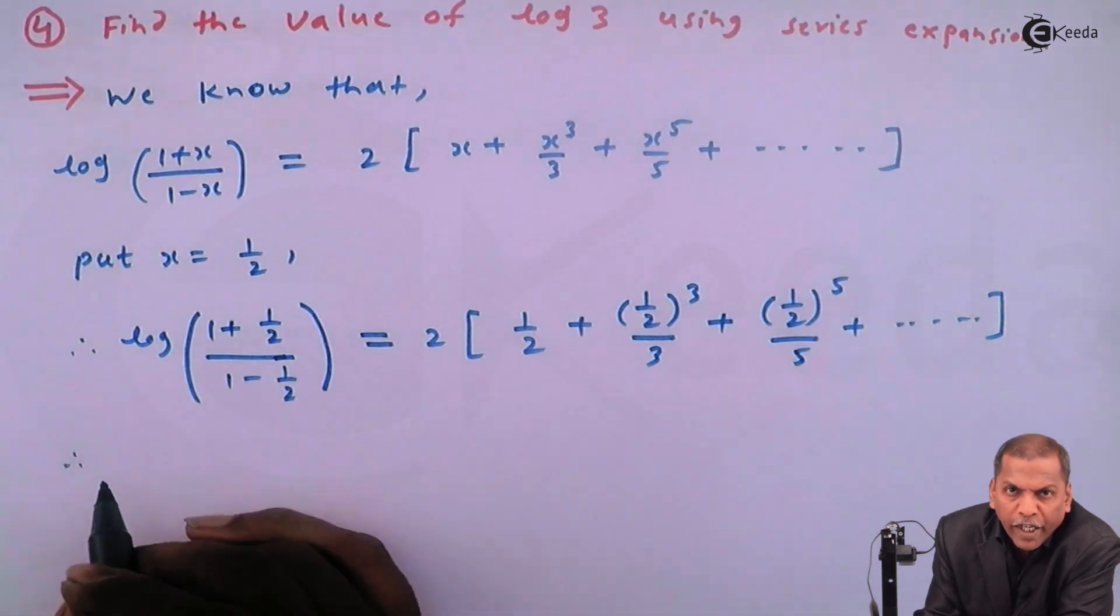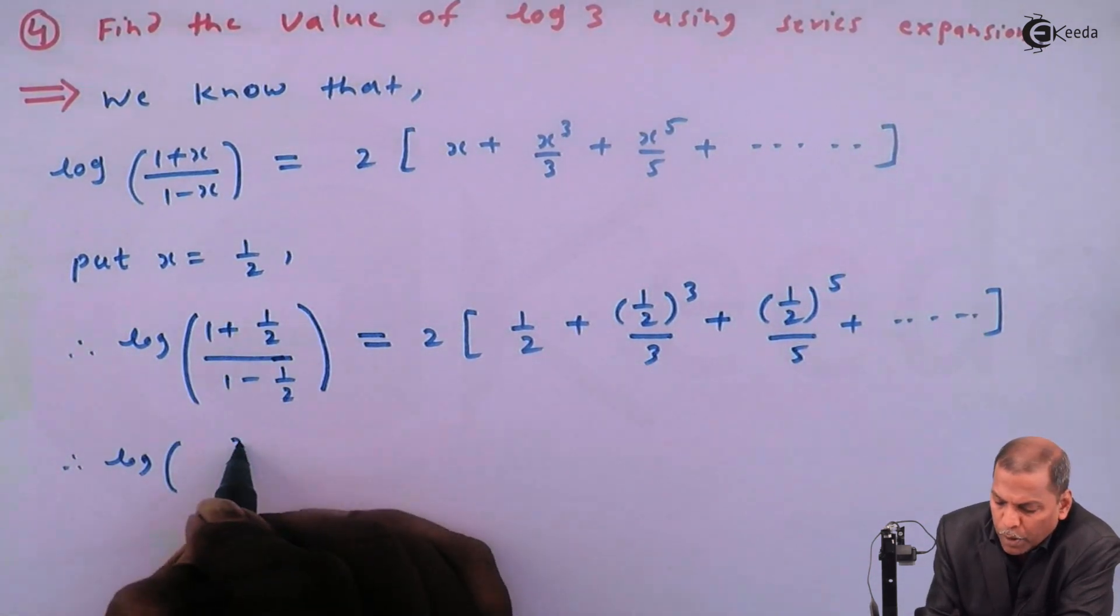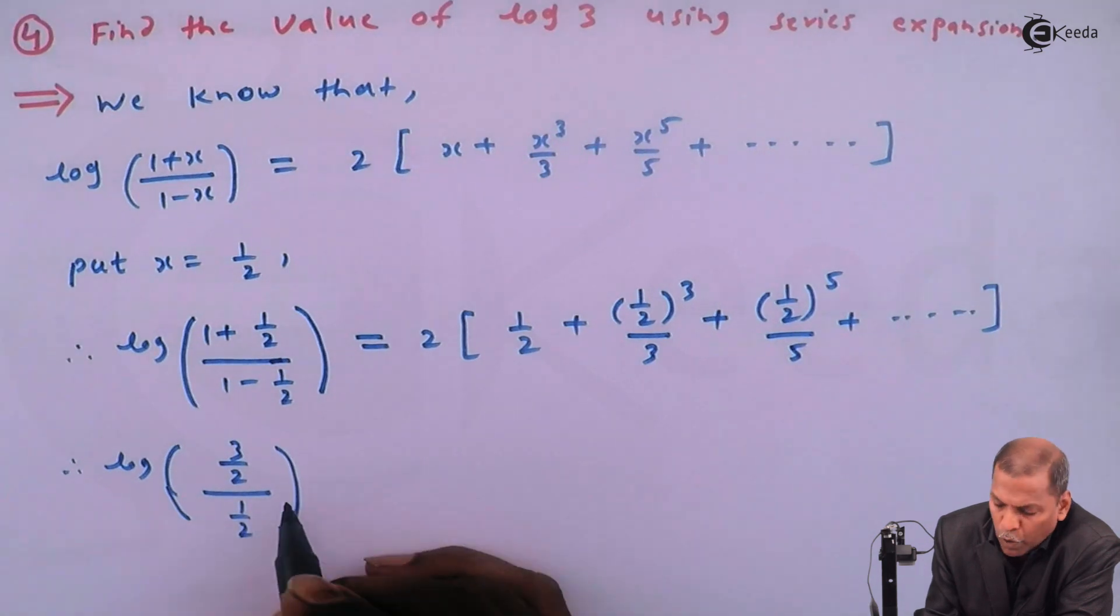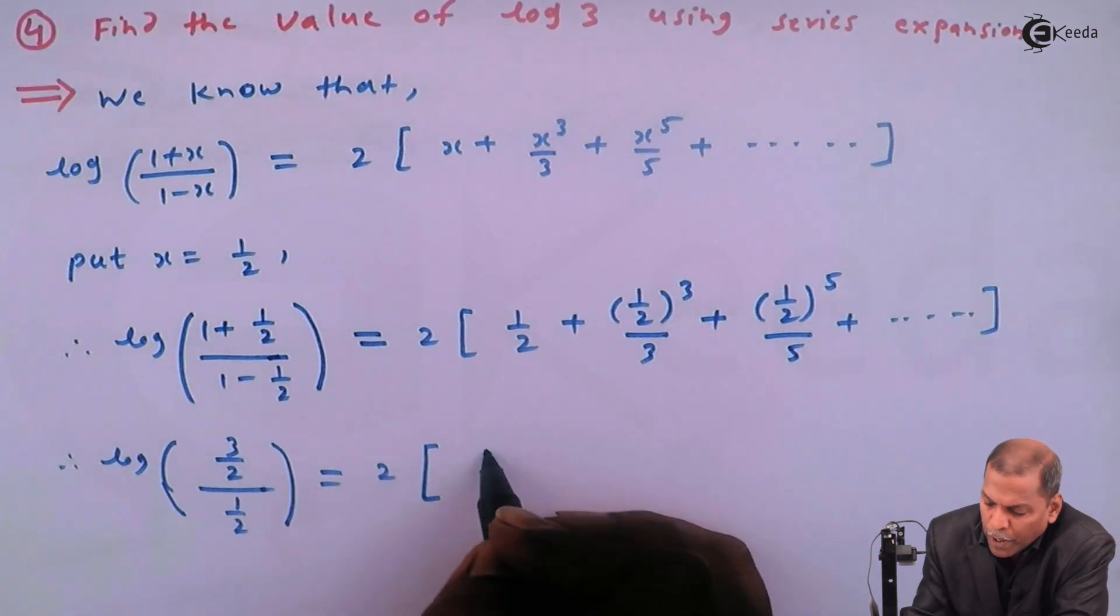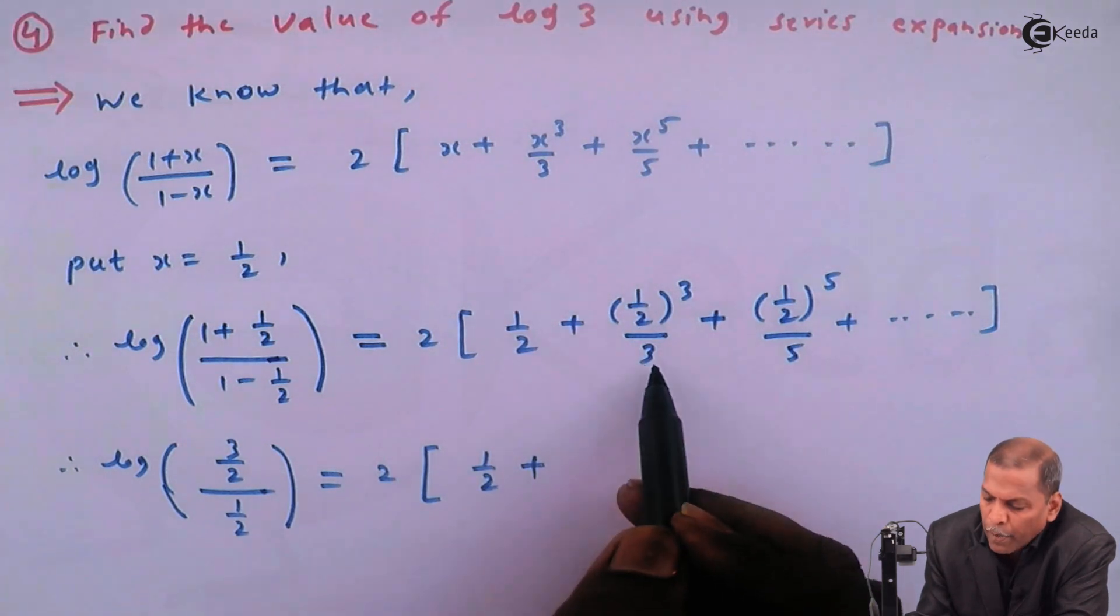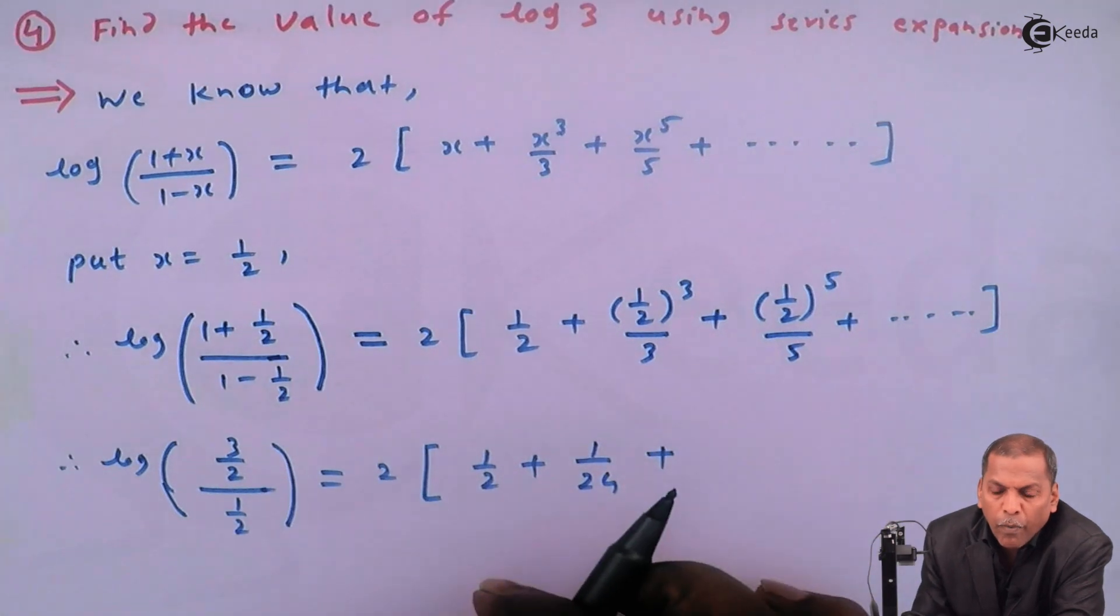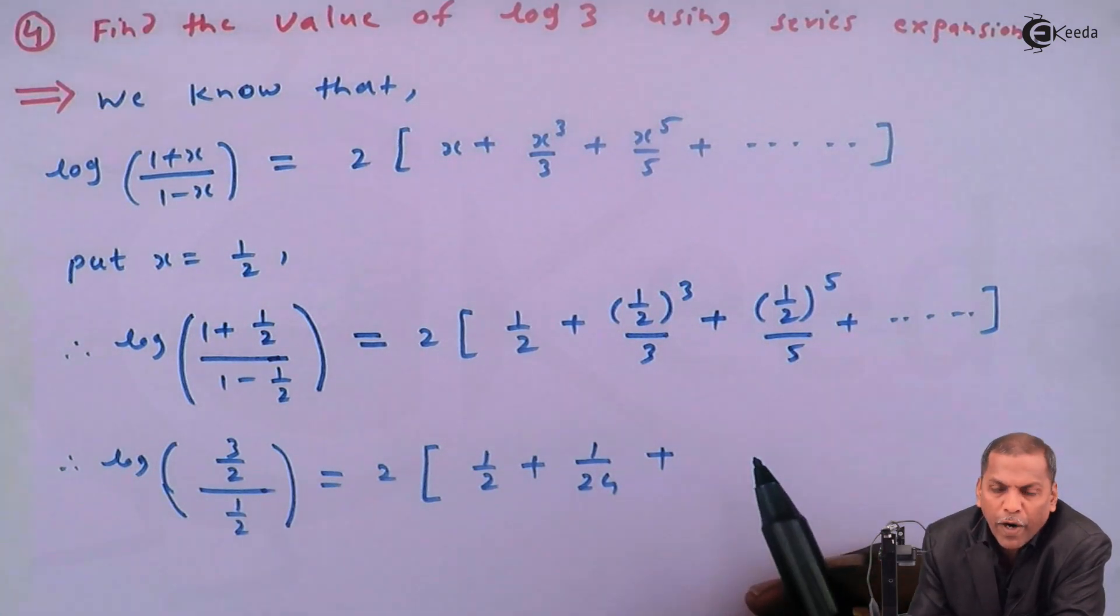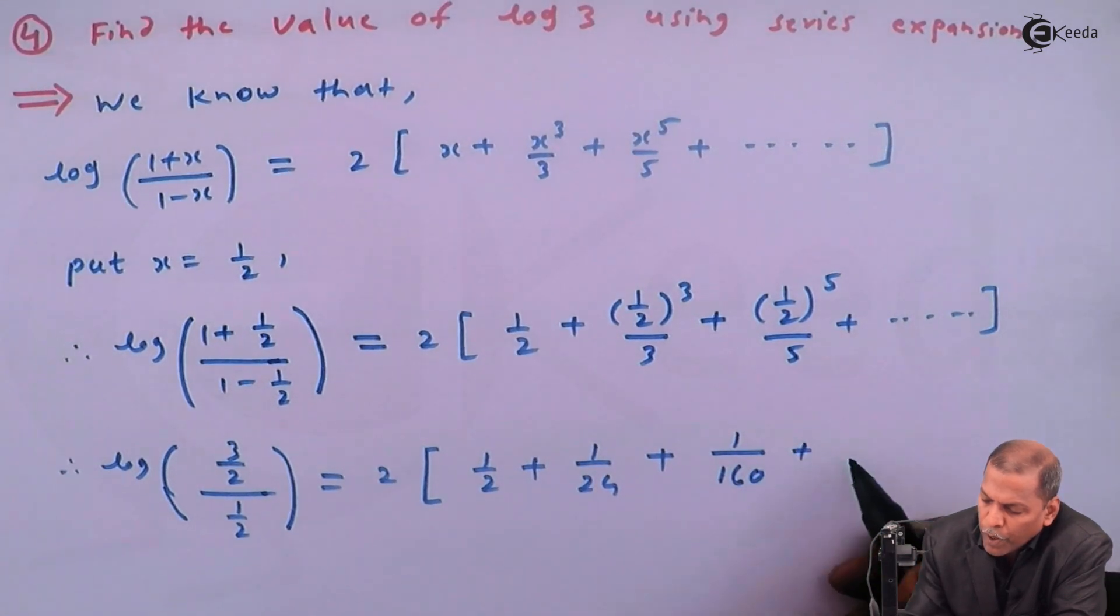On further simplification, we get log(3/2 ÷ 1/2) = 2[1/2 + 1/24 + 1/160 + ...]. Here, (1/2)³ = 1/8 divided by 3 gives 1/24, and (1/2)⁵ = 1/32 divided by 5 gives 1/160.